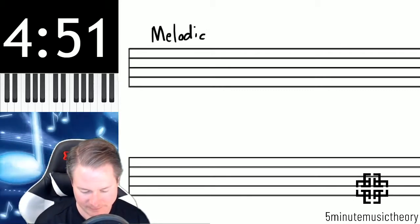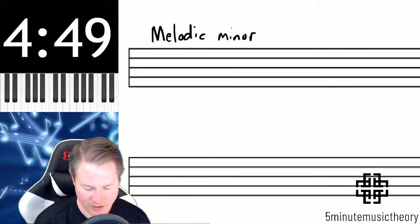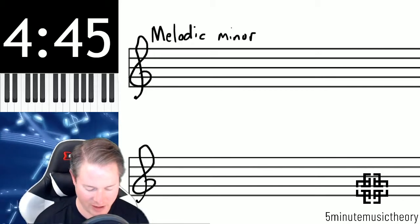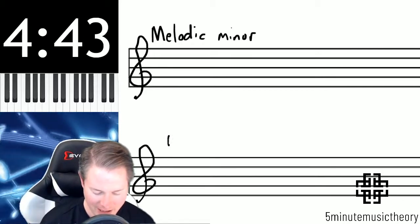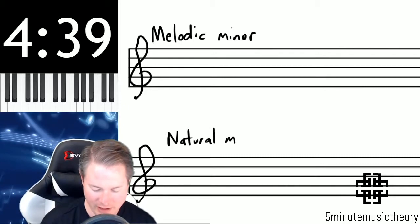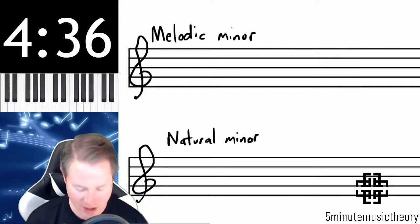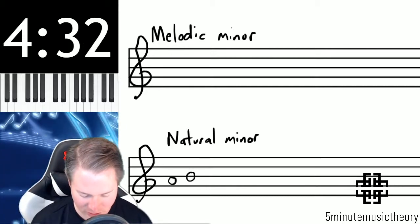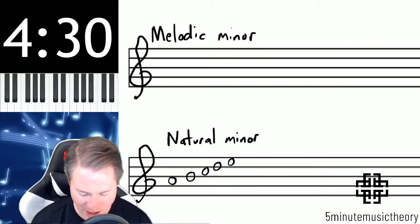We're going to write a melodic minor scale up here at the top, but first I'm going to add another clef on this bottom staff and we're going to review natural minor, then harmonic minor, and then we'll get into the melodic minor. So I'm going to write an A minor scale, an A natural minor, and I'm going to write it going up and down, the ascending and descending versions of this scale.